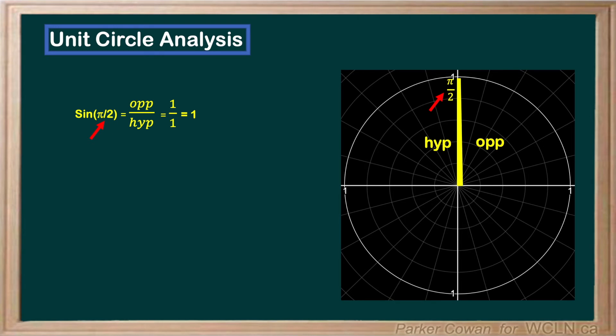Again, let's find the cosine of this angle. This time, our adjacent side is equal to 0, and our hypotenuse, of course, is equal to 1. This is going to give us 0 over 1, or just 0.